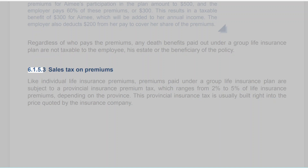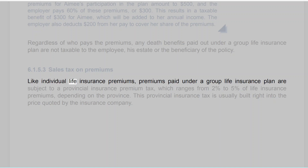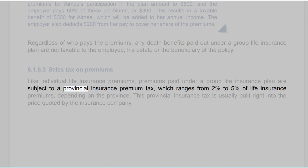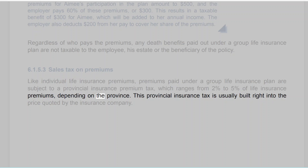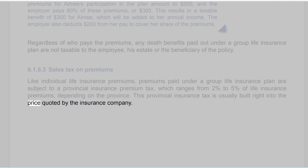6.1.5.3 Sales Tax on Premiums. Like individual life insurance premiums, premiums paid under a group life insurance plan are subject to a provincial insurance premium tax, which ranges from 2% to 5% of life insurance premiums depending on the province. This provincial insurance tax is usually built right into the price quoted by the insurance company.